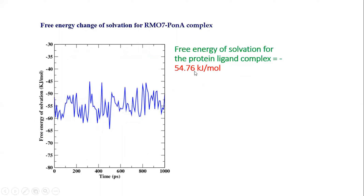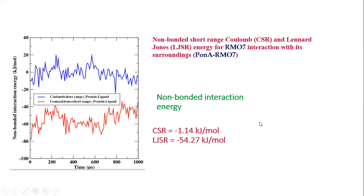The average free energy of solvation was 54.76 kJ/mol. Non-bonded short-range Coulomb energy (CSR) was minus 1.14 kJ/mol. Lennard-Jones non-bonded short-range energy (LJSR) was minus 54.27 kJ/mol. These represent the non-bonded interactions between PonA1 protein and Withanolide A in the complex. The blue structure represents the protein-ligand complex and the red structure represents the single protein, used to depict the CSR and LJSR values.